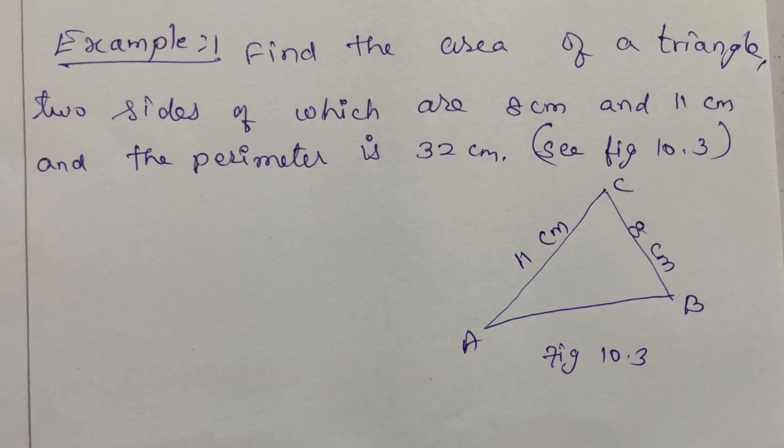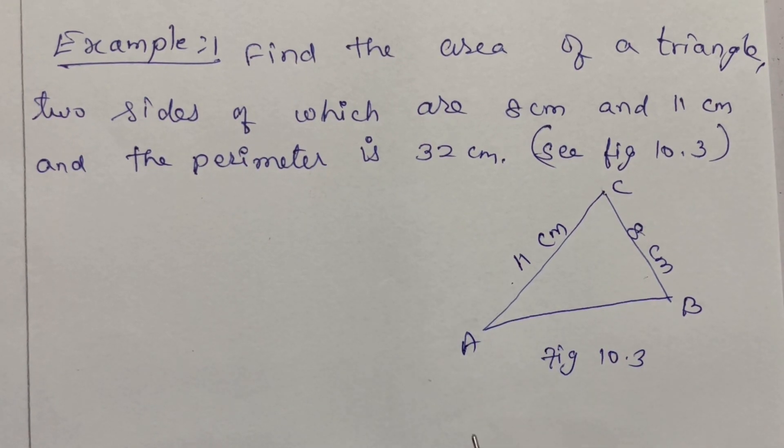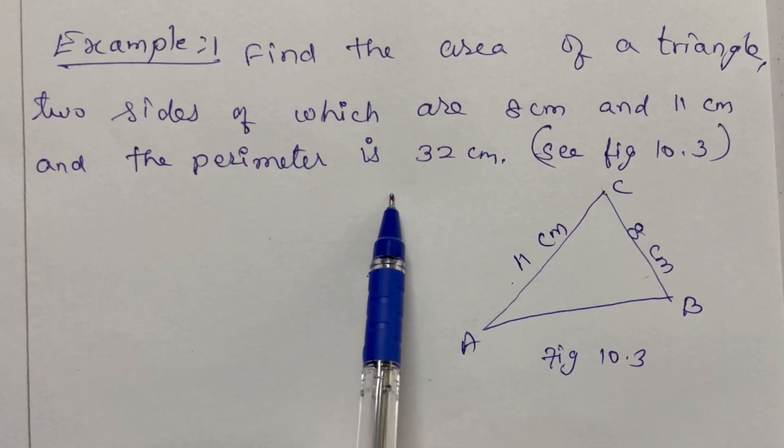Example 1. Find the area of a triangle, two sides of which are 8 cm and 11 cm and the perimeter is 32 cm.